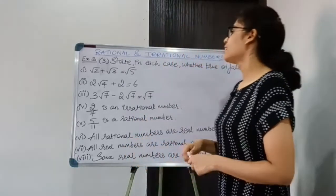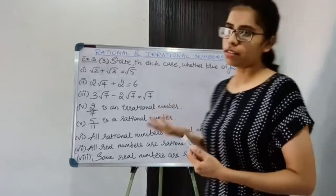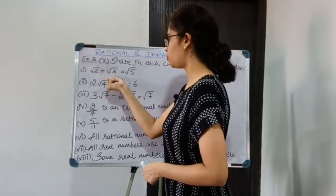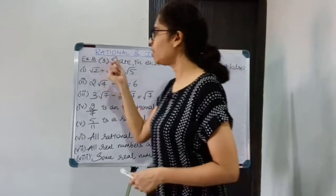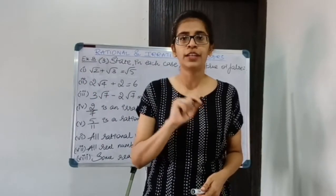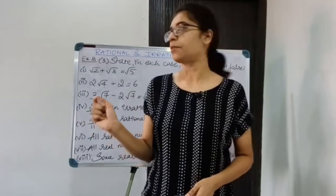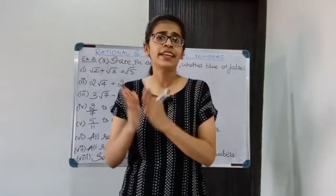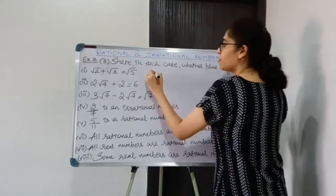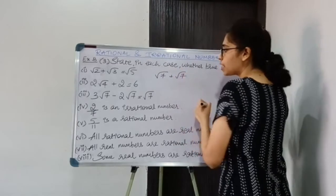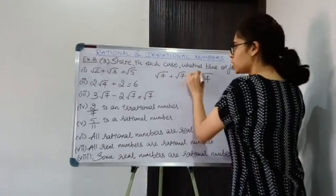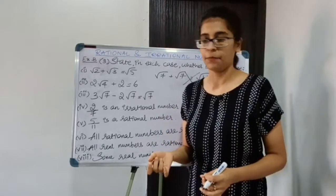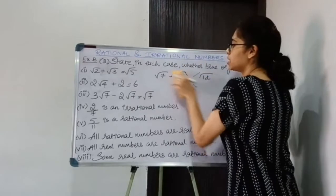Starting with the third question: state in each case whether true or false. You are not asked for reasons. First: √2 + √3 = √5. The values of √2 and √3 added together do not equal √5. You cannot directly add roots — even √7 + √7 is not equal to √14. The statement is false.